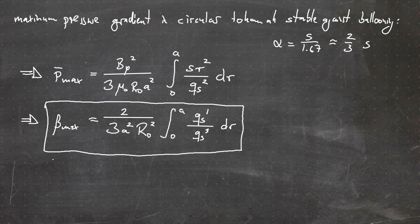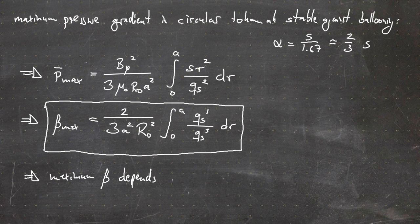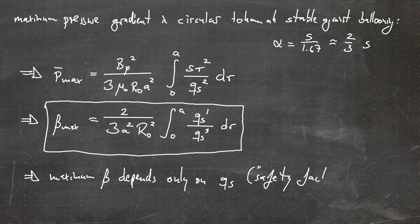Looking closely at this expression, we notice something important: the maximum beta value depends only on q_s. This is one of the reasons the safety factor is called the 'safety factor' — because it essentially sets the maximum beta value we can achieve and thereby determines whether we have a stable plasma.